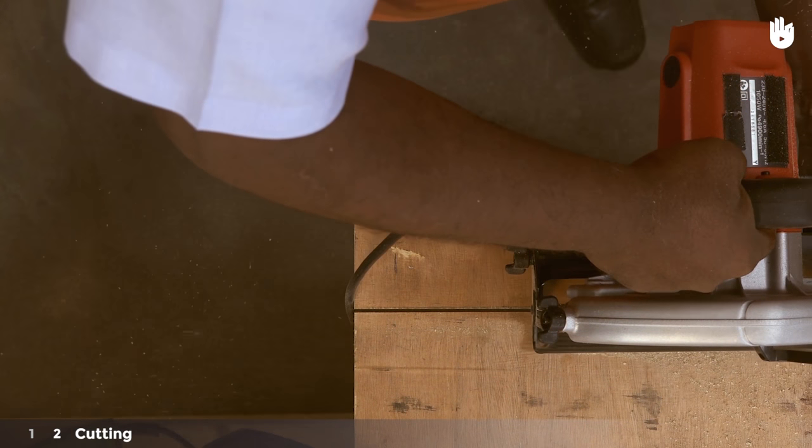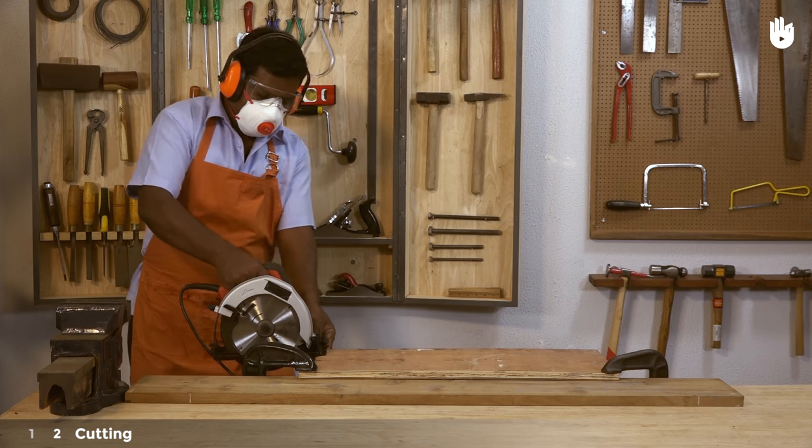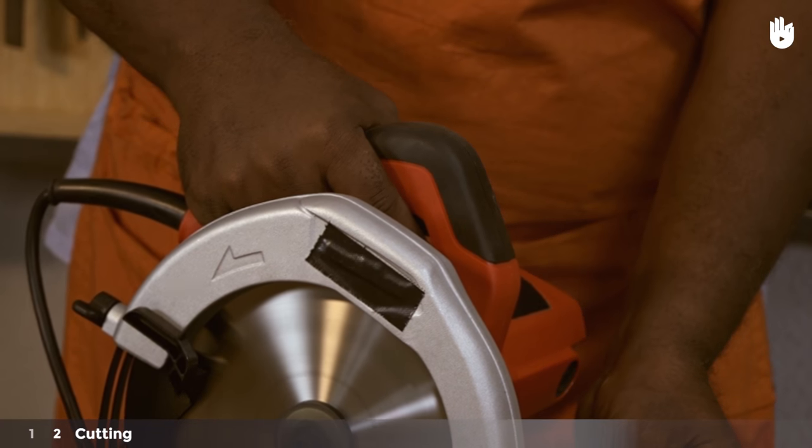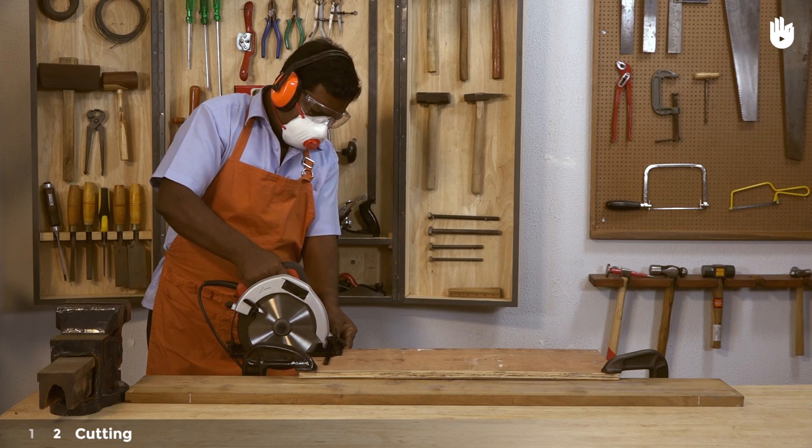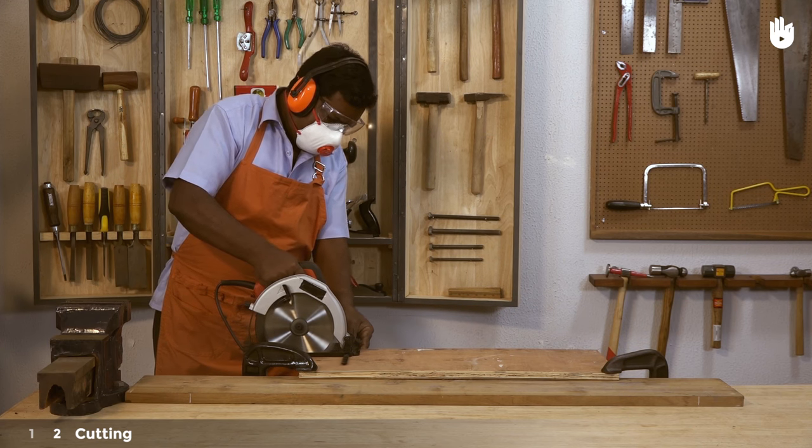Step 2: Cutting. Hold the pistol grip with your dominant hand and turn on the saw. Rest the sole plate against the straight edge and push it forward slowly.